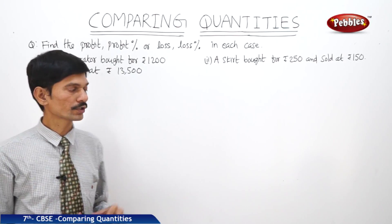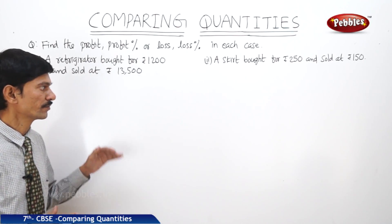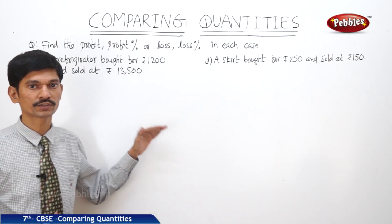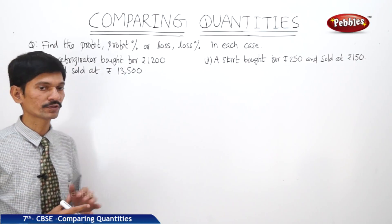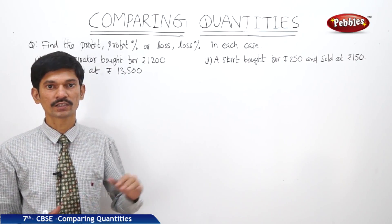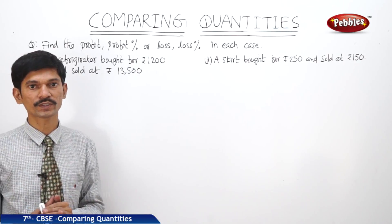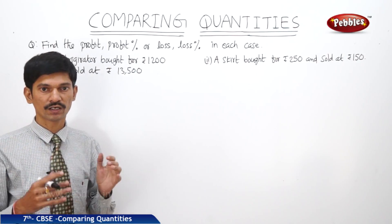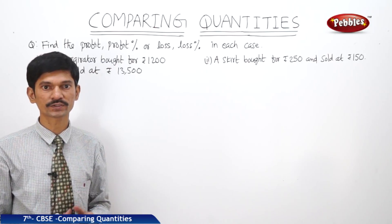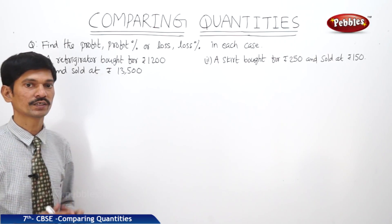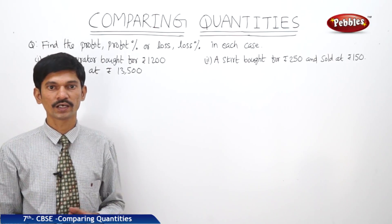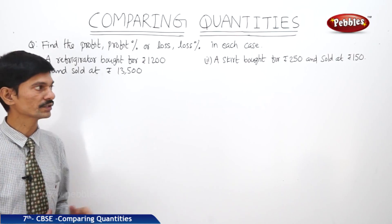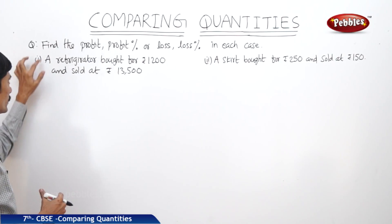So far we have discussed how to present the ratios, how to convert the ratios into percentages. We have also discussed increase percent, decrease percent, profit and profit percent, loss and loss percent, and also interest and the total amount to be paid at the end of particular years. Now we will solve some problems.